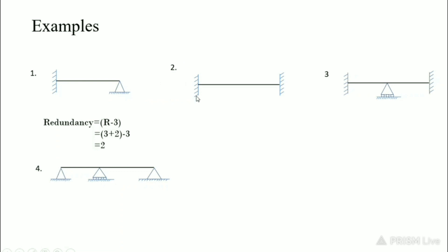Second example: a beam with both sides fixed. Redundancy equals r minus 3. There are 3 reactions for one fixed support and 3 reactions for the other fixed support, giving r equals 6, so redundancy equals 6 minus 3 equals 3.